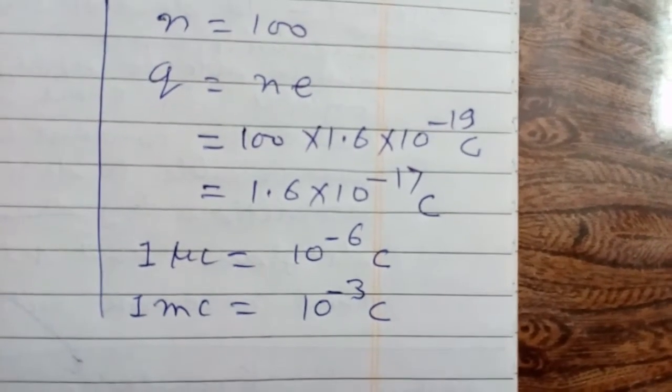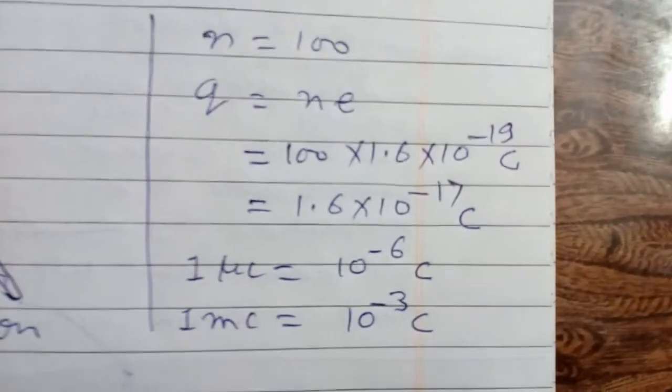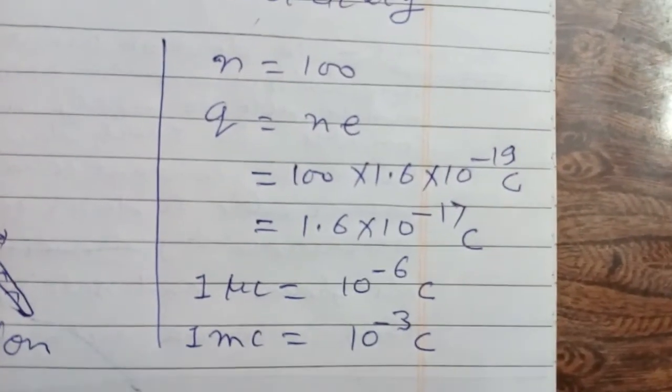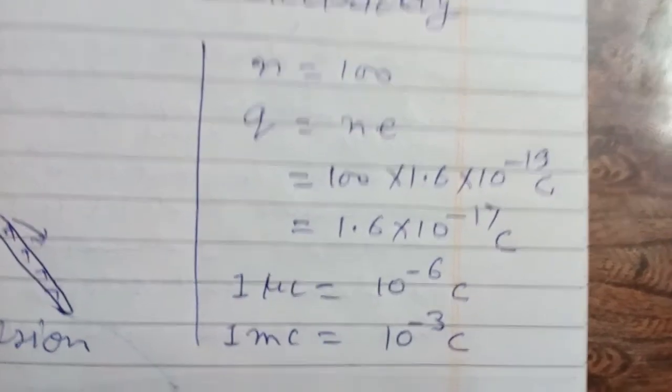Now Coulomb is very large unit of charge. So its smaller units are micro coulomb and millicoulomb. One micro coulomb is equal to 10 to the power minus 6 coulomb, and one millicoulomb is equal to 10 to the power minus 3 coulomb.